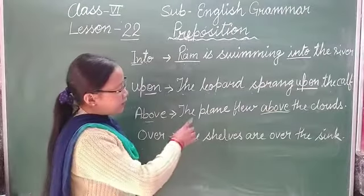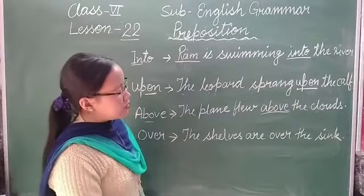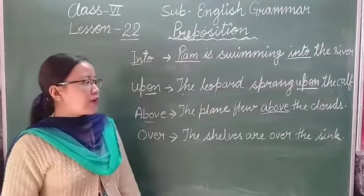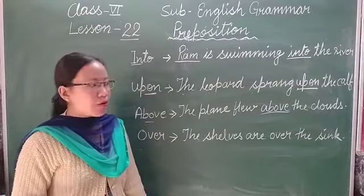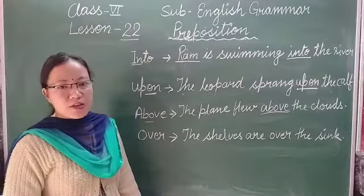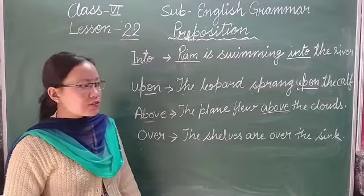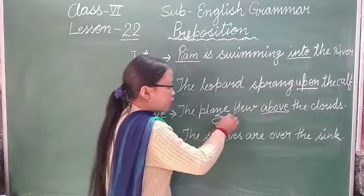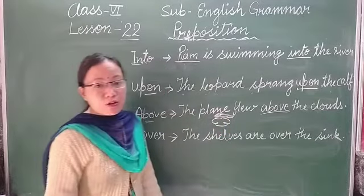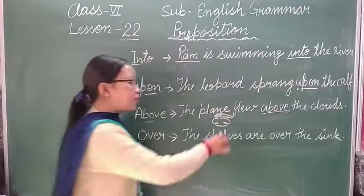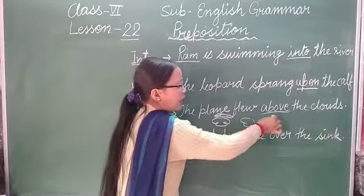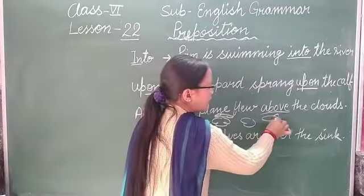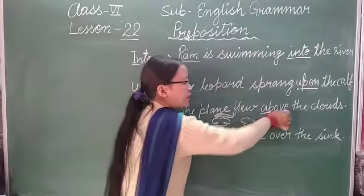Next is 'above'. Above also means 'upar' (over/above). Example: 'The plane flew above the clouds.' We use 'above' when we are not definite about the exact direction — the plane is not flying exactly directly above the clouds but somewhere around them.